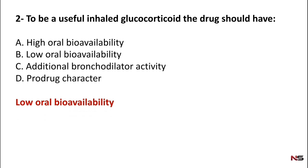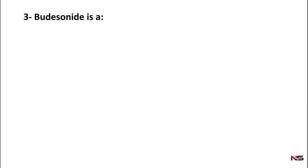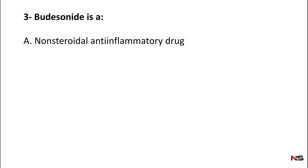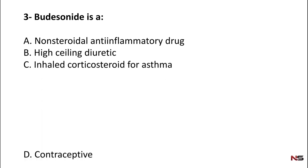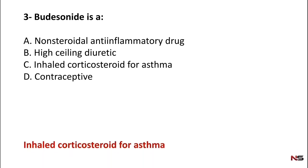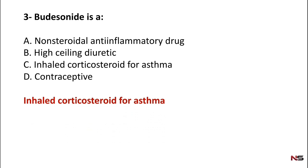Question 3: Budesonide is — option A: non-steroidal anti-inflammatory drug (NSAID); option B: high saline diuretic; option C: inhaled corticosteroid for asthma; option D: contraceptive. The correct answer is option C — inhaled corticosteroid for asthma. Budesonide is a corticosteroid used for asthma.